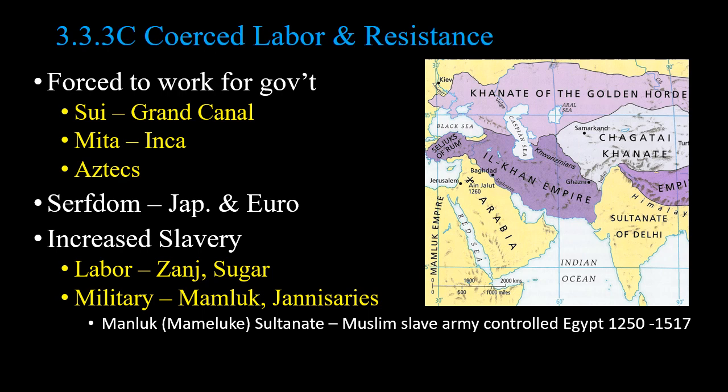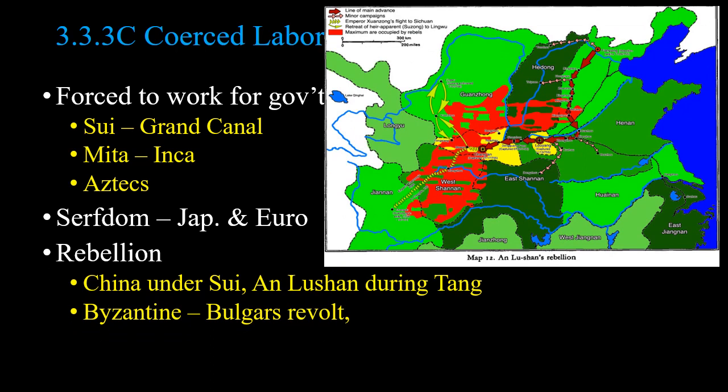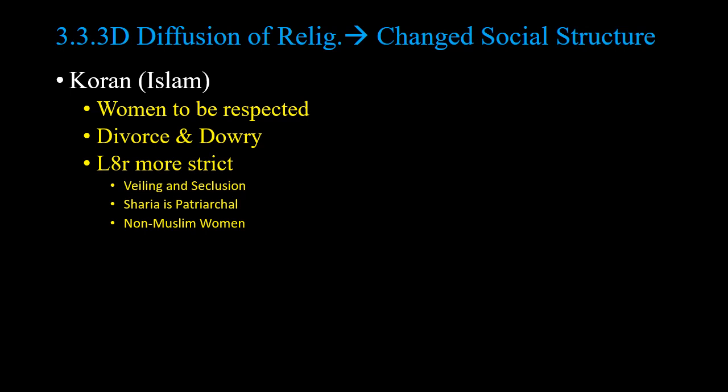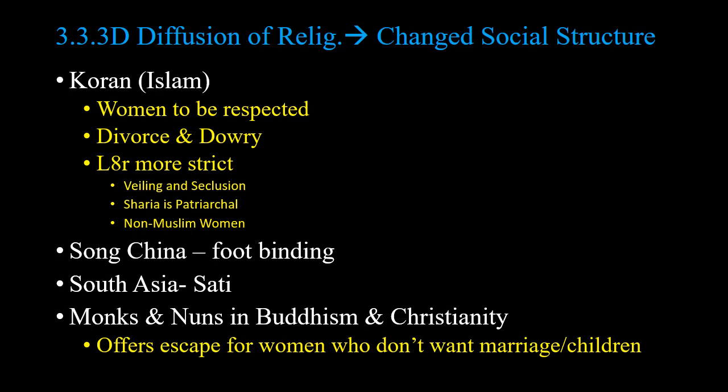There are also slave soldiers — janissaries, mamluks, etc. There were rebellions: under the Sui, the An Lushan Rebellion during the Tang, and the Bulgar Revolt in the Byzantine Empire. Religion changes gender relationships: Buddhism, Christianity, Islam, and Neo-Confucianism can make things more or less patriarchal. Women are to be respected in the Quran — there are rules about divorce and dowry — though later more strict with veiling and seclusion. The Song Dynasty brings in foot binding. South Asia has the sati ritual where widows immolate themselves on their husband's funeral pyre. In Christianity and Buddhism, monks and nuns exist, meaning women who become nuns can get out of the normal lifestyle of marriage and children and have some freedom.